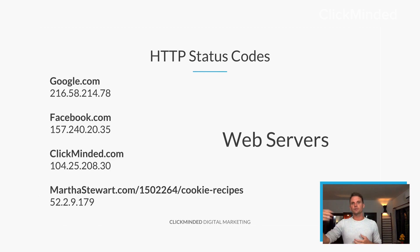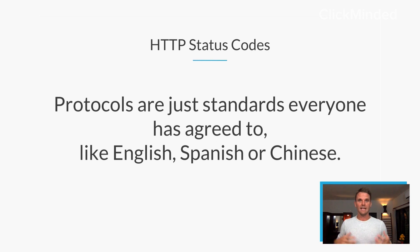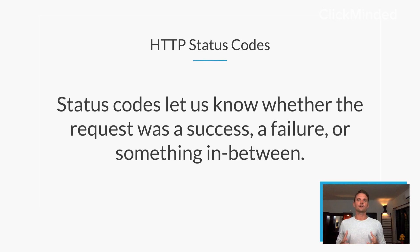Whenever you request a website, you're usually making a request from a web server. You make a request and the server responds — that's happening every single time you're clicking a link. You make this request using what we call the HTTP protocol. Protocols are really just standards that everyone on the internet has agreed to; it's no different than English or Spanish or Chinese — it's a language that we've all agreed to. A client makes a request to the server, and status codes let us know whether the request was a success, a failure, or something in between. That's what an HTTP status code is.